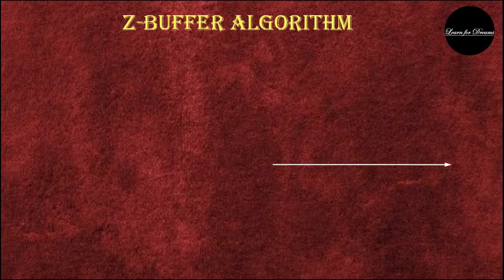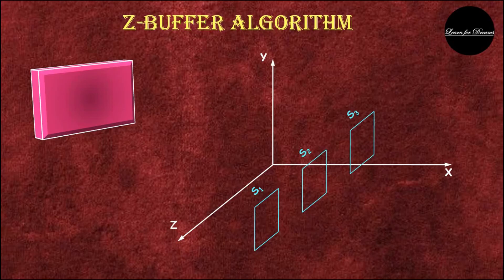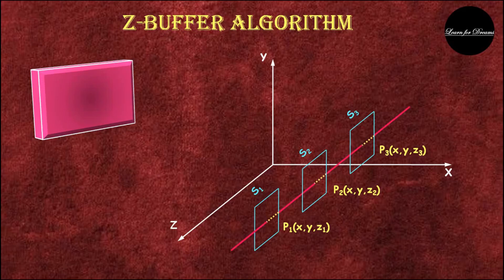Consider the XYZ axis. These are three different planes — S1, S2, and S3 — with the same X and Y coordinates but different Z coordinates. This means S2 is behind S1, and S3 is behind S2. The Z-buffer is a backend program component that stores Z values for each pixel.